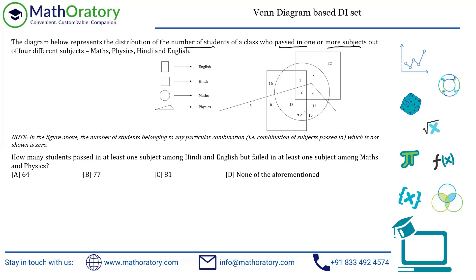Question 1 asks: how many students passed in at least one subject among Hindi and English, but failed in at least one subject among Maths and Physics? Hindi and English are the square and rectangle. For students to pass in at least one of Hindi and English, numbers that are not part of the rectangle and not part of the square can be ignored. So this 11 is not part of the rectangle or square, this 15 is not part of them either, and this 5 is also not part of them — so these numbers can be straight away excluded.